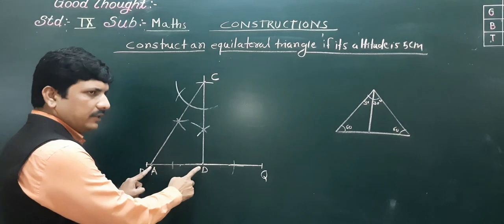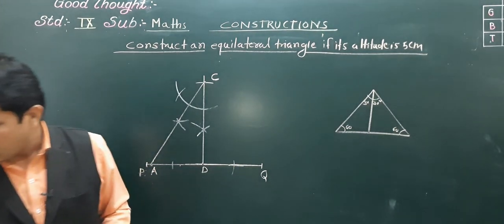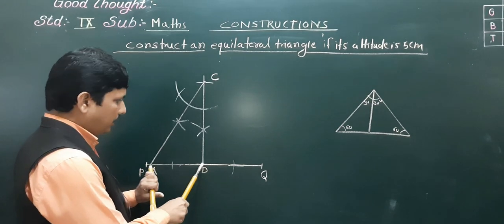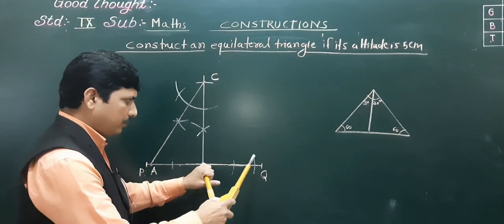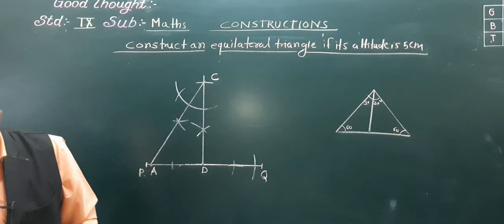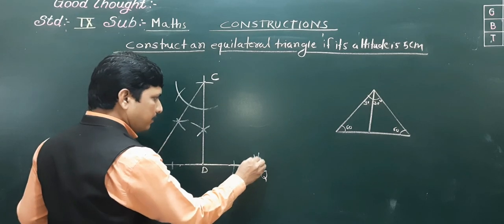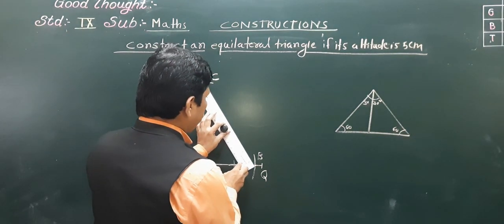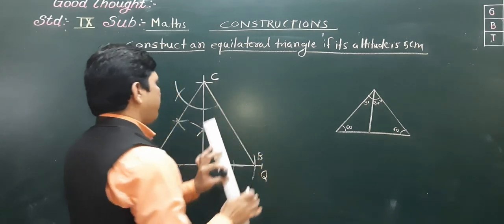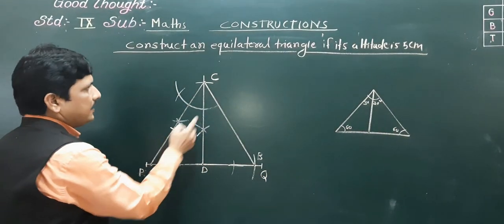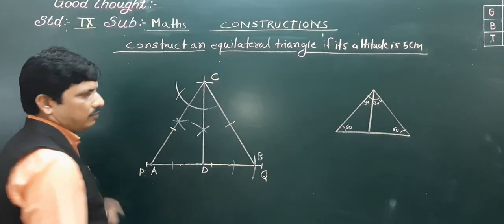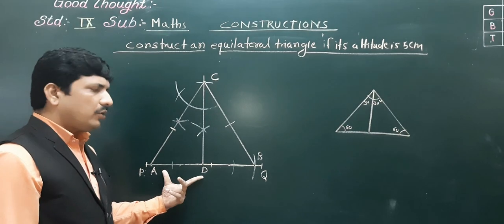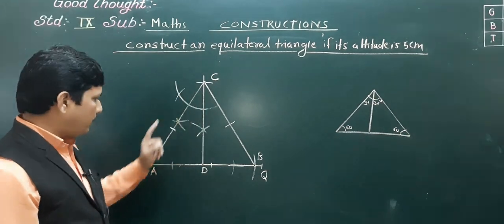Now we know that CD is the altitude and also the median of the equilateral triangle, because altitude and median of an equilateral triangle are always the same. So the distance AD on one side of D is the same on the other side. Take distance AD and mark the same distance on the right side of D — that point is B. Join CB, and this gives our required equilateral triangle ABC.